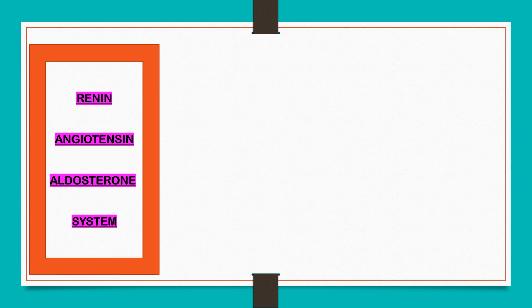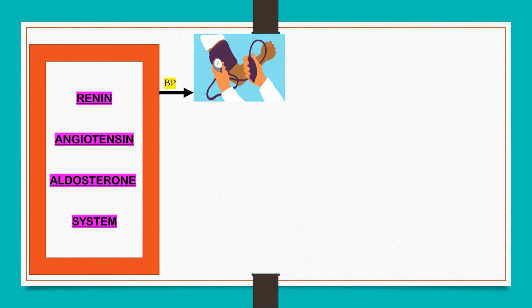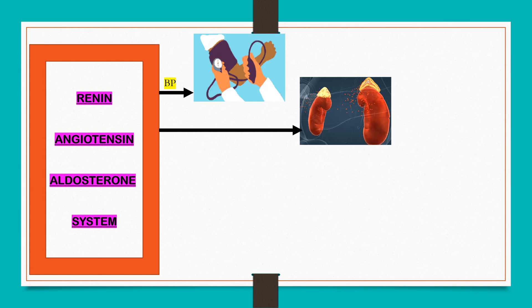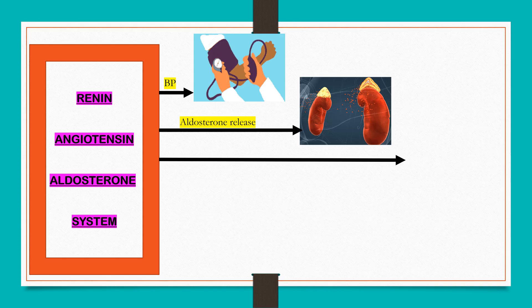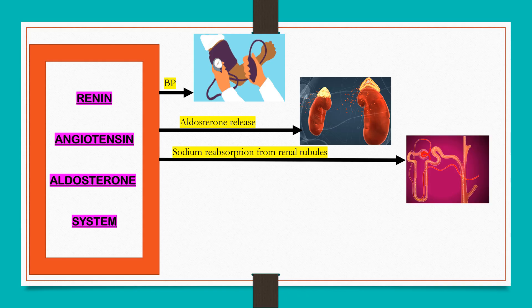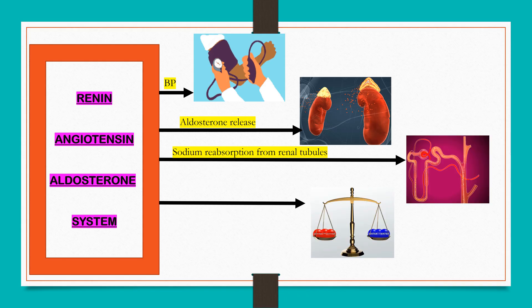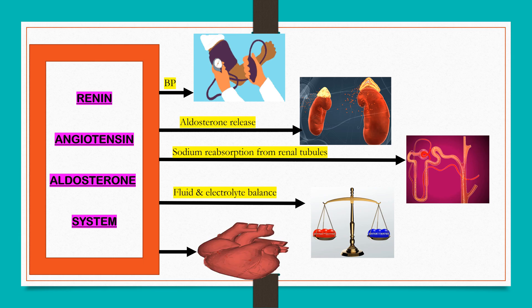The renin-angiotensin-aldosterone system present in the body regulates blood pressure, aldosterone release, sodium reabsorption from renal tubules, fluid and electrolyte balance, and cardiac remodeling.